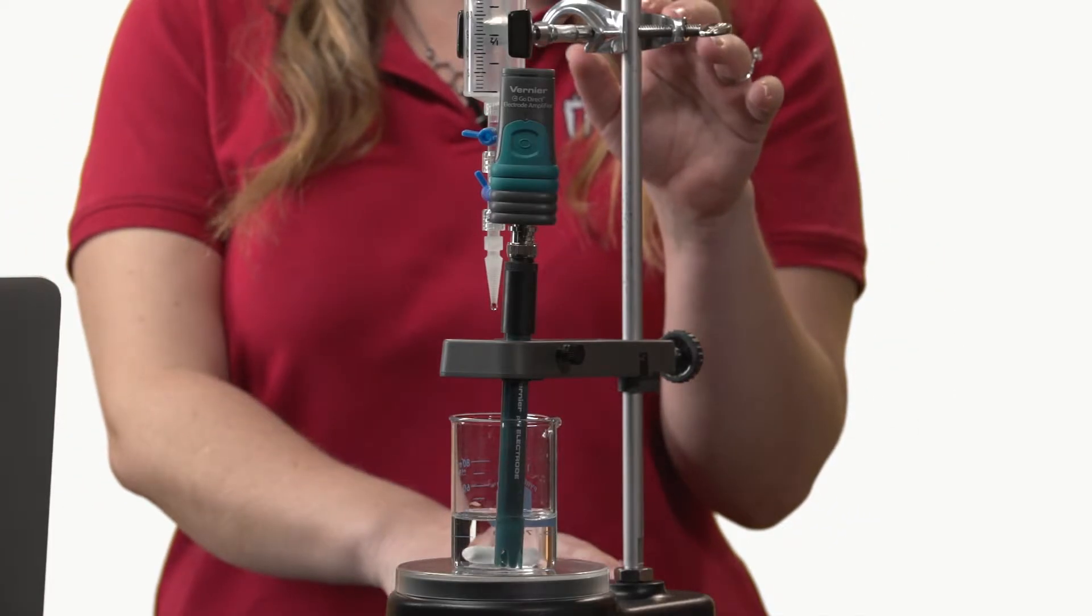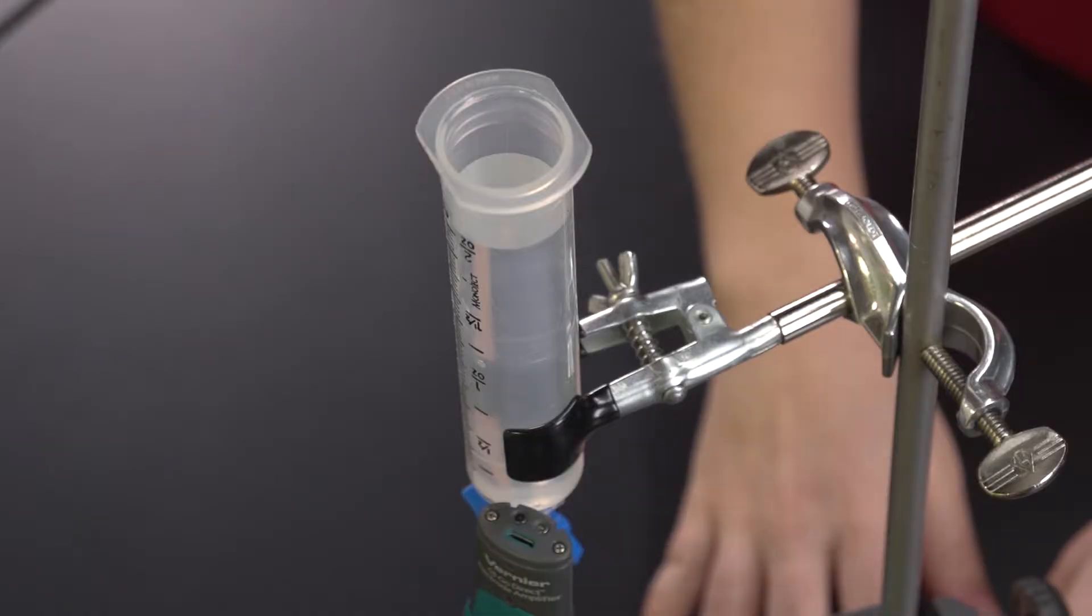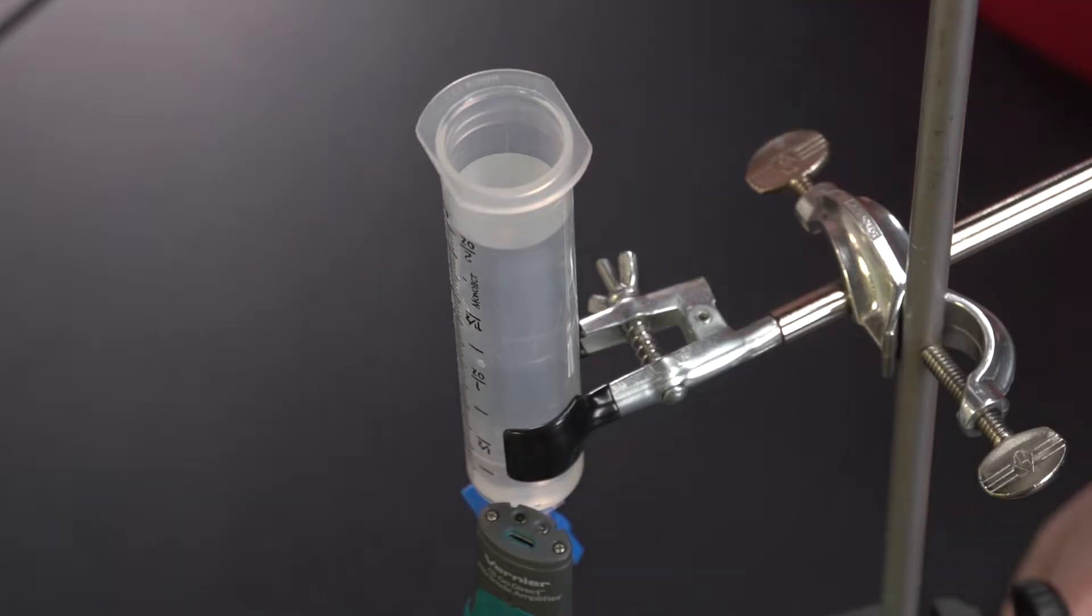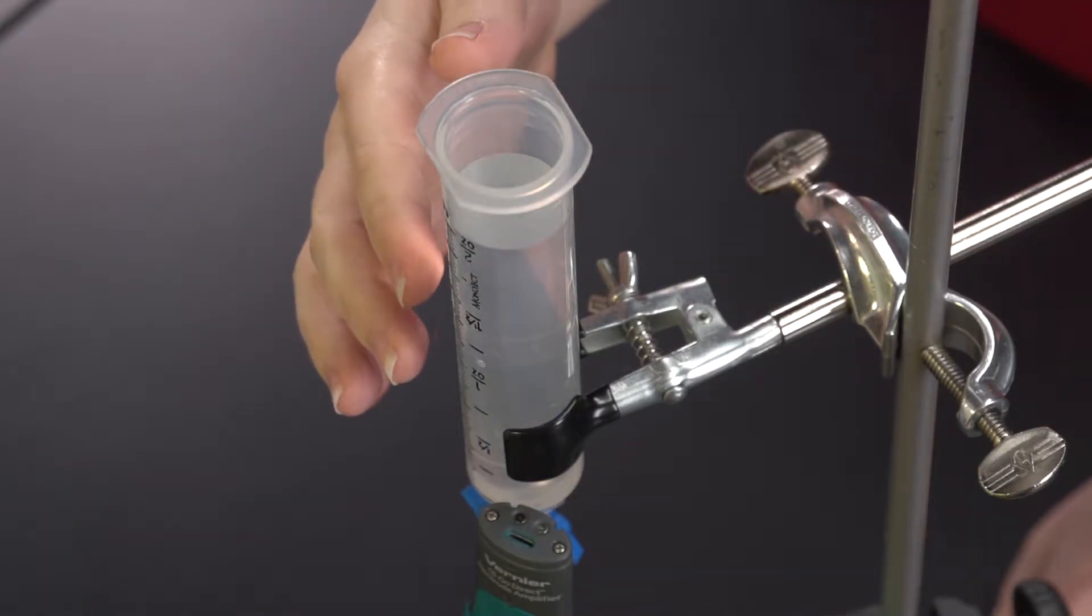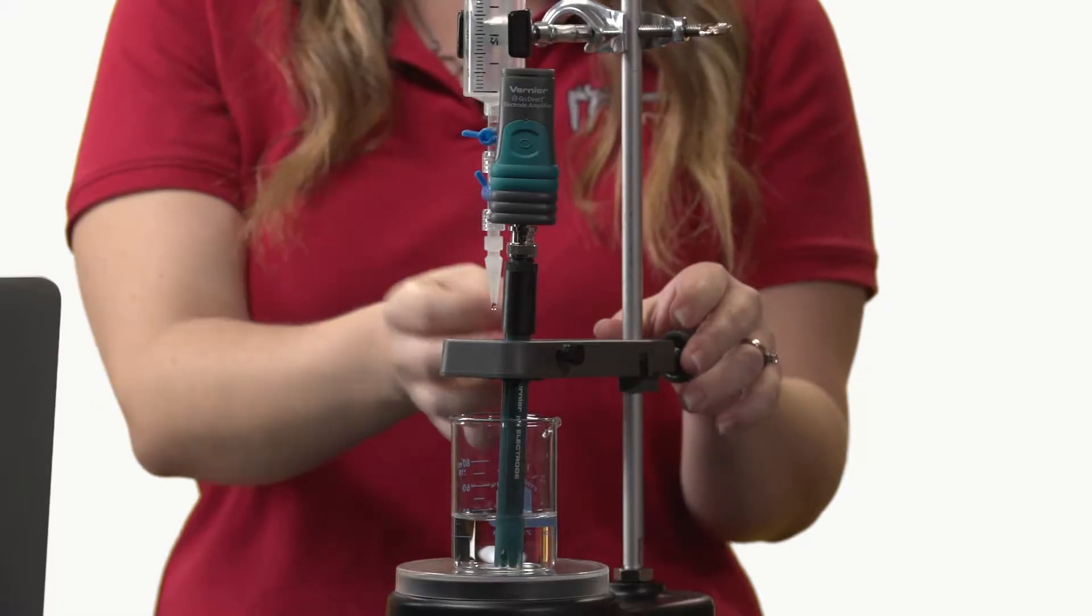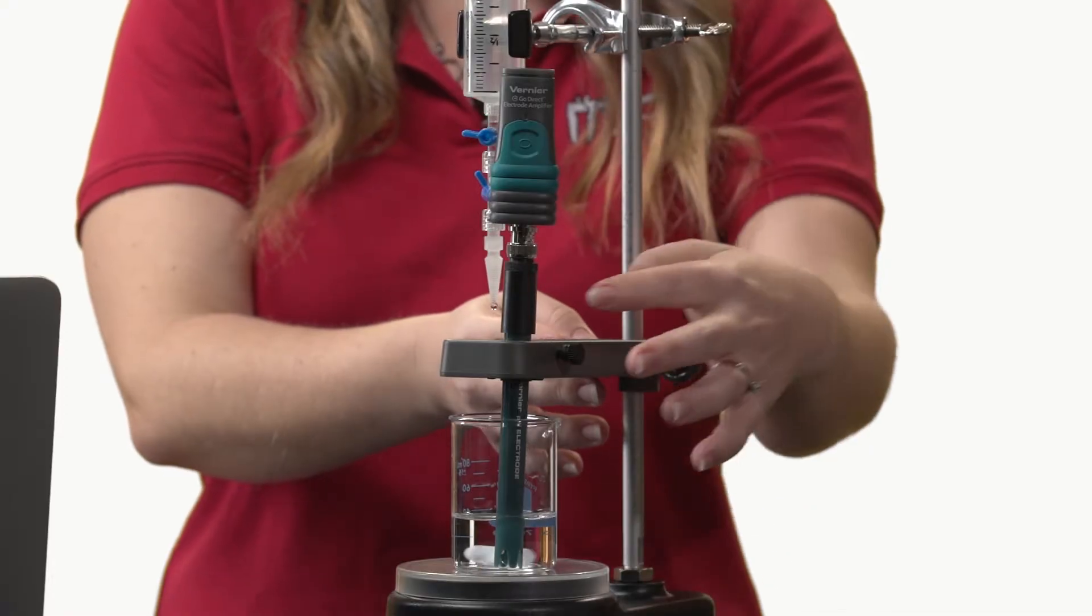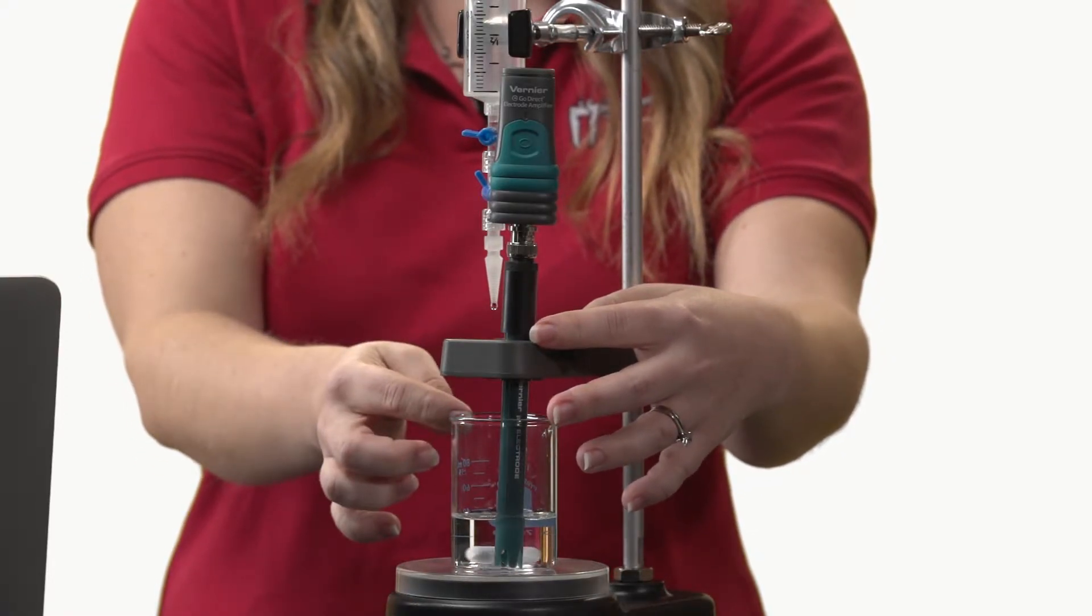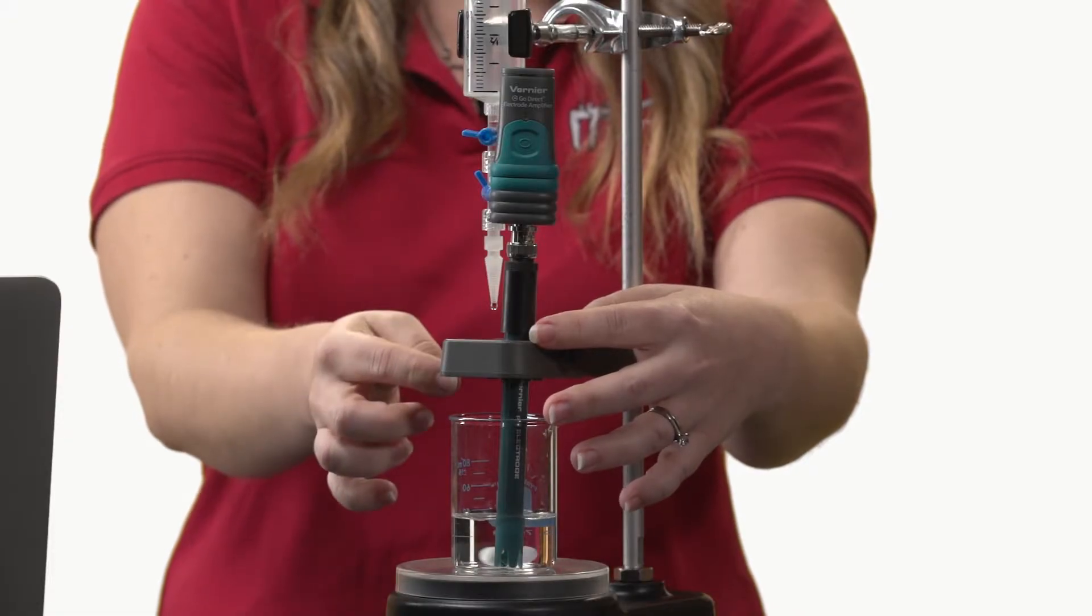I have my stir station with the utility clamp holding my reagent reservoir for the drop counter. Sodium hydroxide is in the reagent reservoir. The drop counter is attached, the pH probe is in the electrode opening, and the drops from the reagent reservoir go through this opening.